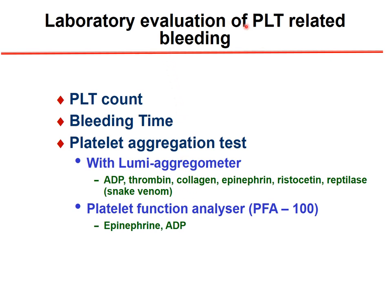For laboratory evaluation of platelet-related bleeding, we can measure the platelet count, bleeding time, and platelet aggregation tests. Platelet aggregation tests are measured using a Lumi aggregometer with substances such as ADP, thrombin, collagen, epinephrine, ristocetin, and streptokinase, which activate the platelet through different systems. We first collect platelet-enriched plasma and then use the Lumi aggregometer. Alternatively, we can use the PFA (Platelet Function Analyzer) with different disks such as epinephrine- or ADP-containing disks.